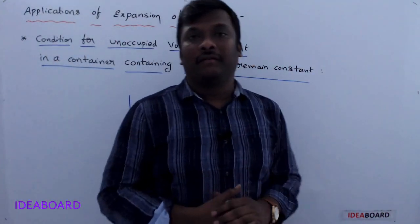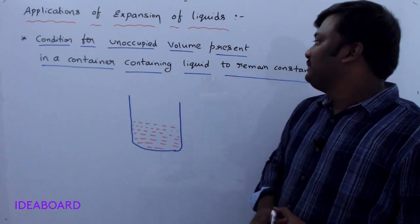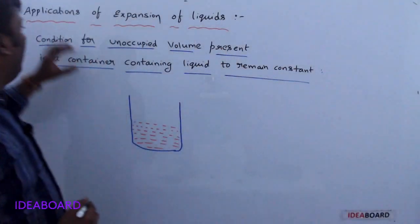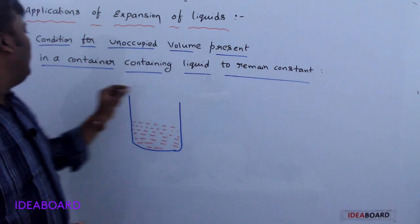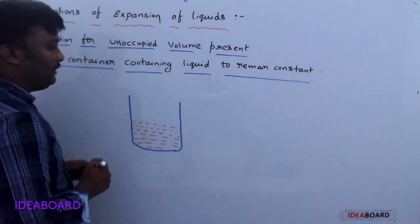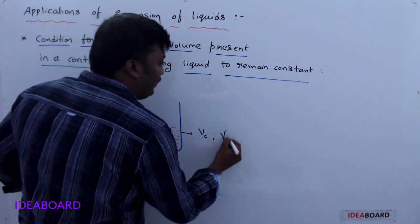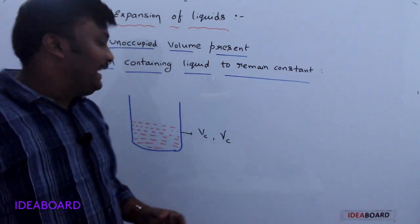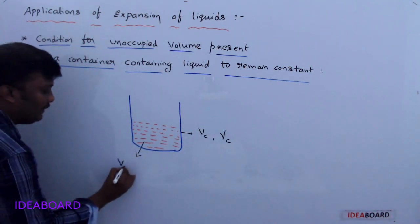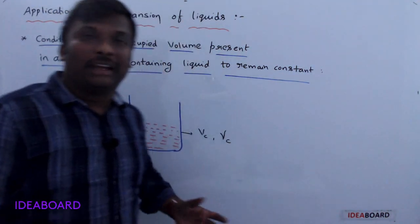Now let us see the applications of expansion of liquid. One application is the condition for the unoccupied volume present in a container holding liquid to remain constant. Consider a vessel with volume Vc and coefficient of cubical expansion gamma C. Within it, liquid of volume Vl and coefficient of cubical expansion gamma L is filled up to a certain level, leaving an unoccupied region above the liquid.